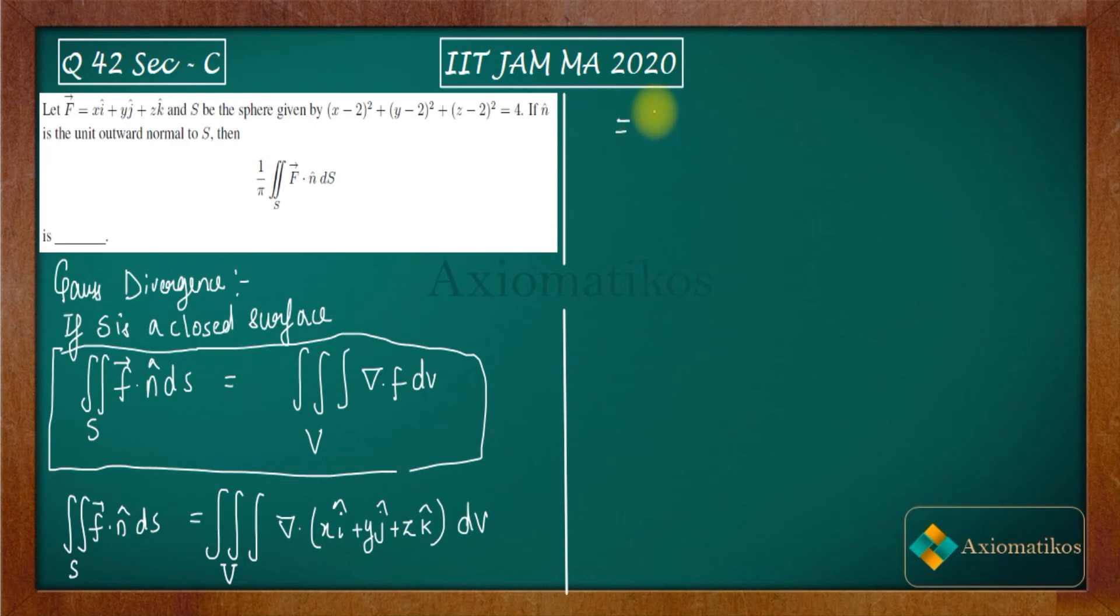So finally, from here, what you will get? Triple integral del dot of this vector. Del dot of this vector will be three. Calculate this yourself. It's divergence of this vector. So it will be three times dV.